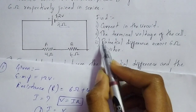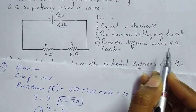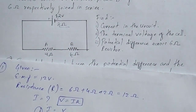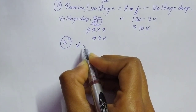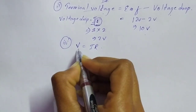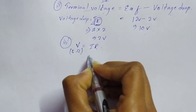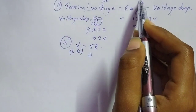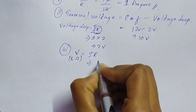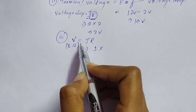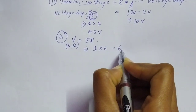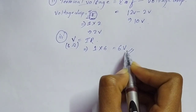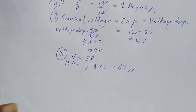There is also a third subpart of question 1: find the potential difference across the 6 ohm resistor. Using V = IR for the 6 ohm resistor: current is 1 ampere and resistance is 6 ohm, so potential difference = 1 × 6 = 6 volt. That is the voltage drop across the 6 ohm resistor. Question 1 is now complete.